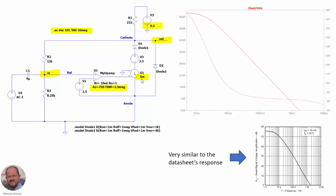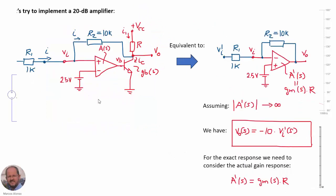For this we have adjusted three parameters: the DC gain and also the bandwidth, matching the response obtained from the datasheet.